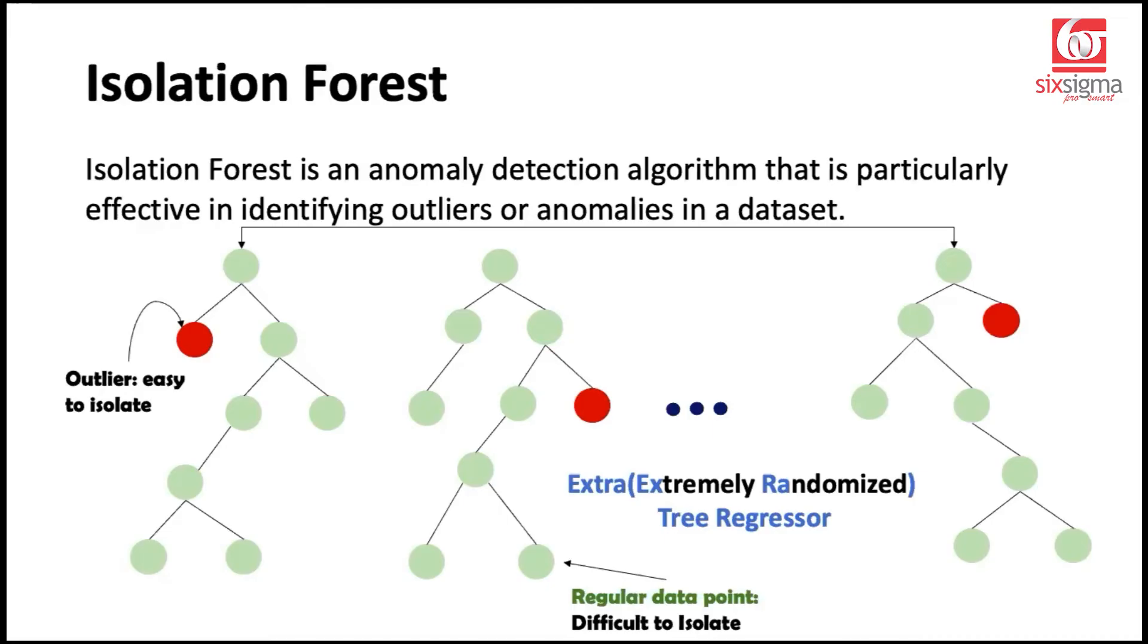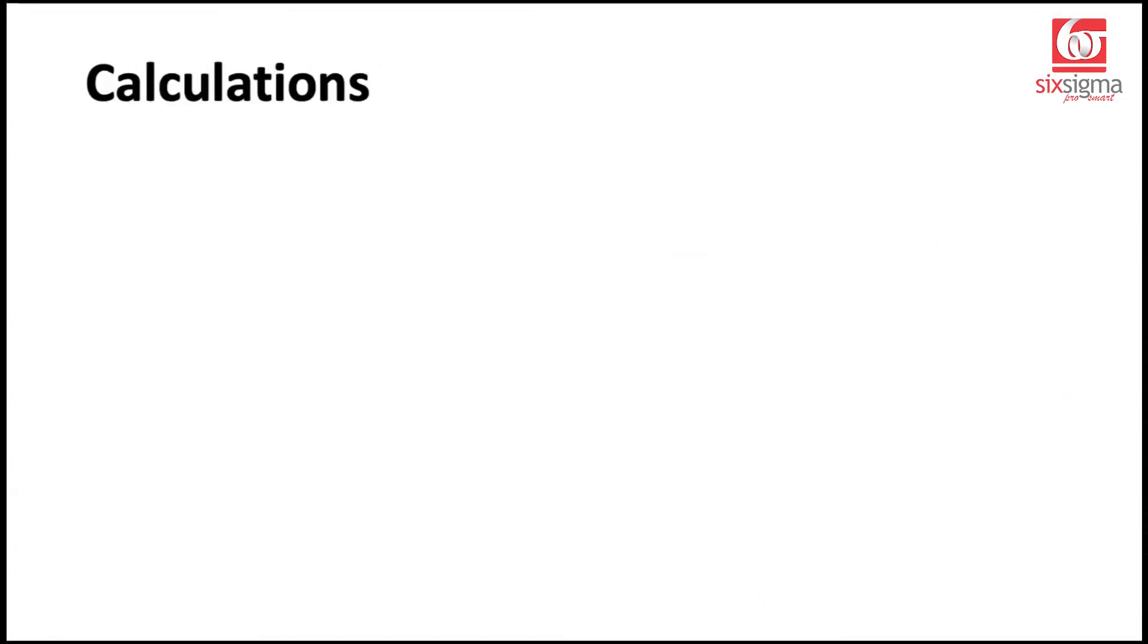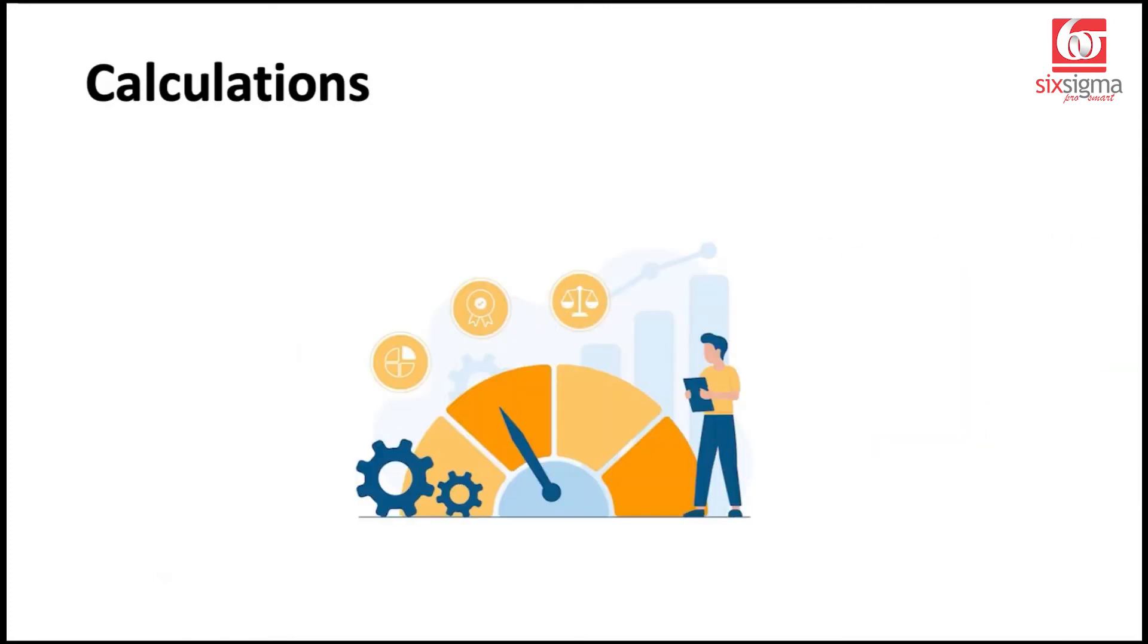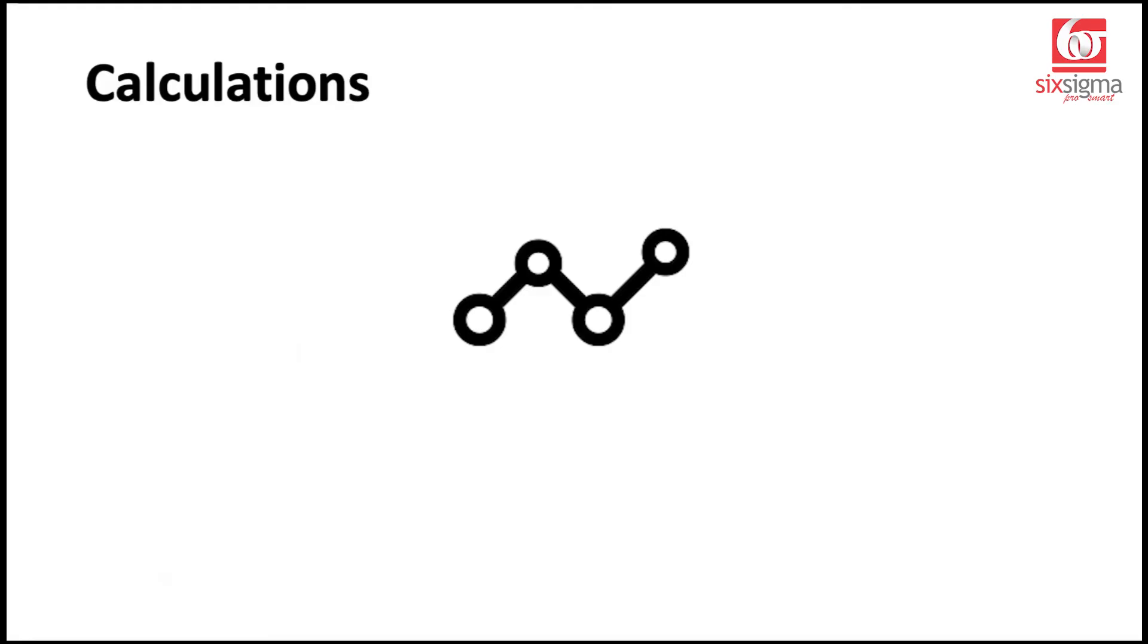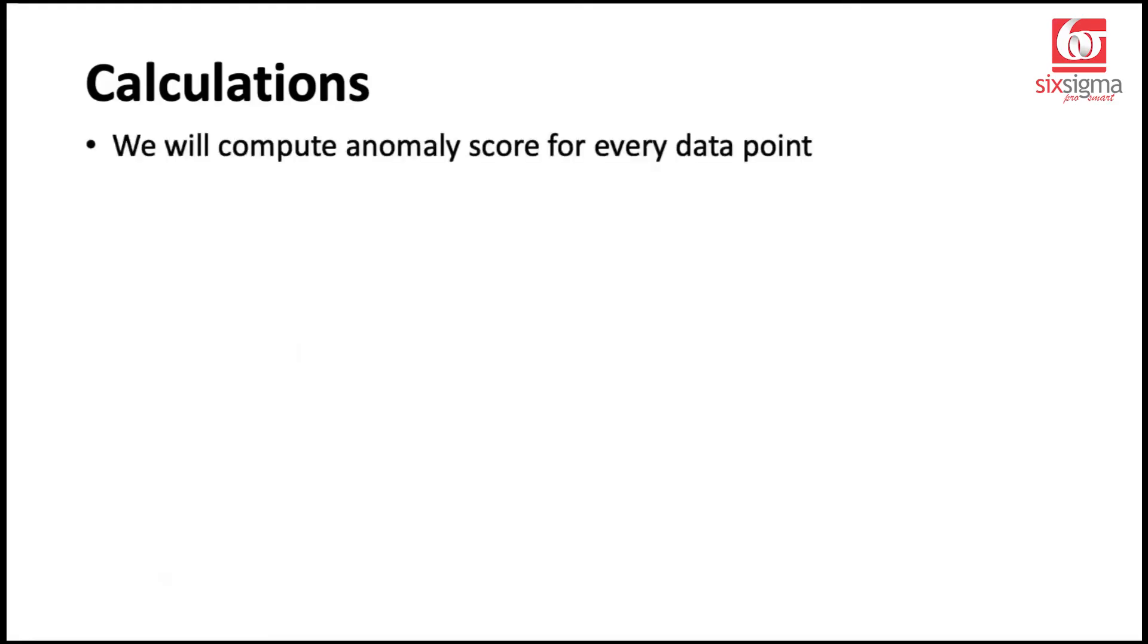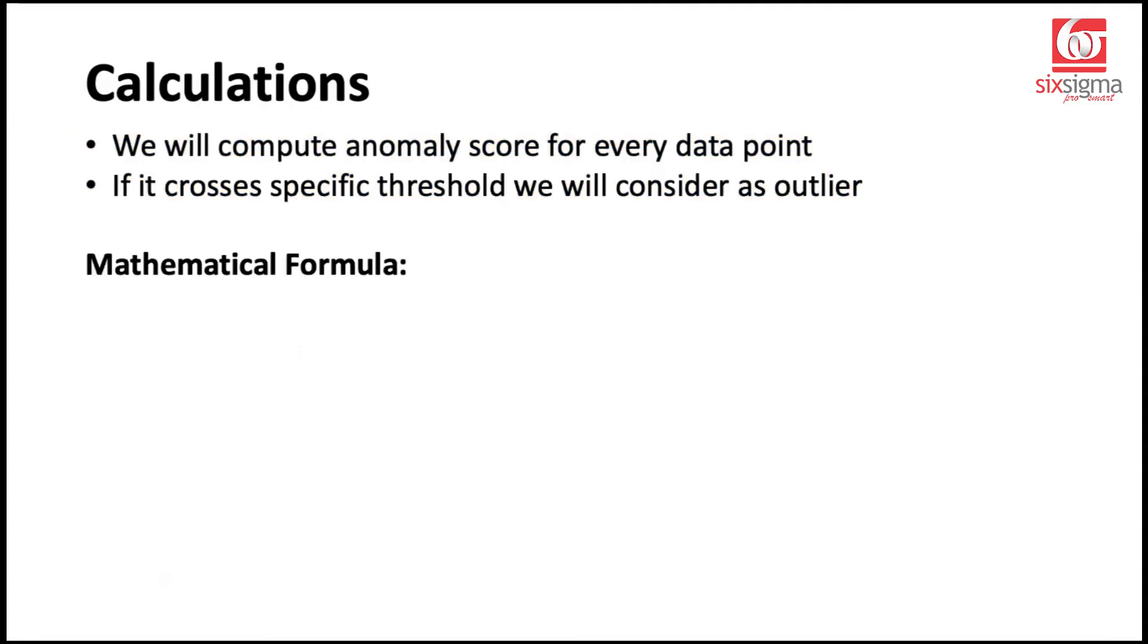Now, let's look at the math behind this. There are a couple of terms that we need to understand, and then we'll be sorted as to how this actually works. Essentially, an isolation forest is able to generate an anomaly score for every data point. And certain data points above a threshold are named as outliers. Let's see how this works. First of all, we compute the anomaly score for every data point. If it crosses a specific threshold, we consider it as outlier.